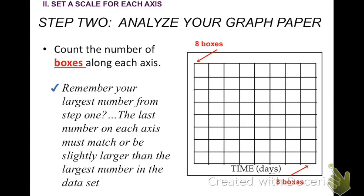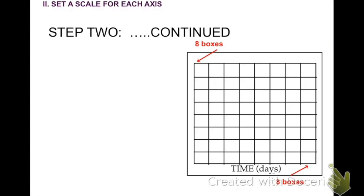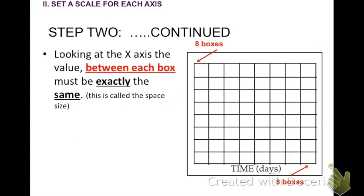Remember your largest number from step one, time. Remember that was 210 days. That should be your last number or at least close. It should be even maybe a little bit higher because if it doesn't divide out perfectly, it might be a little bit higher. So 210, 212, 215, 218, something like that. Close to 210 though. Looking at the x-axis, the value between each box must be exactly the same. We call it equal increments. They have to be the same. This will be points taken off if you do not have equal increments. And you end at around 210 or a little bit over 210.